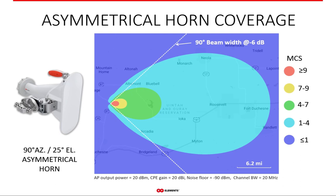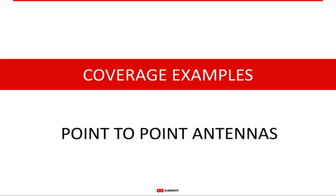The same applies to asymmetrical horns. The coverage shown is for the 90-degree asymmetrical RF Elements horn. Any antenna gives similar results in terms of there being multiple MCS zones within the beam width angle, and signal going beyond that angle as well. Similar images can be produced for point-to-point antennas, which show even more obviously that coverage is much more than beam width alone.